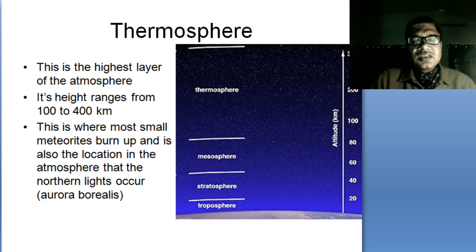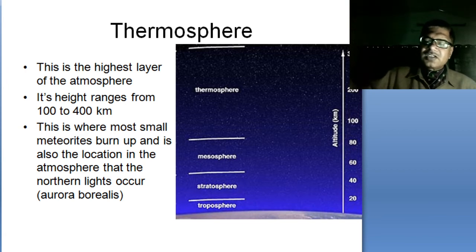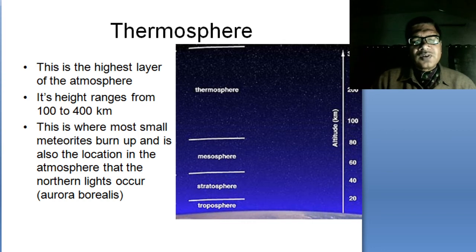So these are the, when they reach the Earth's surface, we call them as meteoroids. Otherwise, when they look like a shooting star, we call them as meteors.